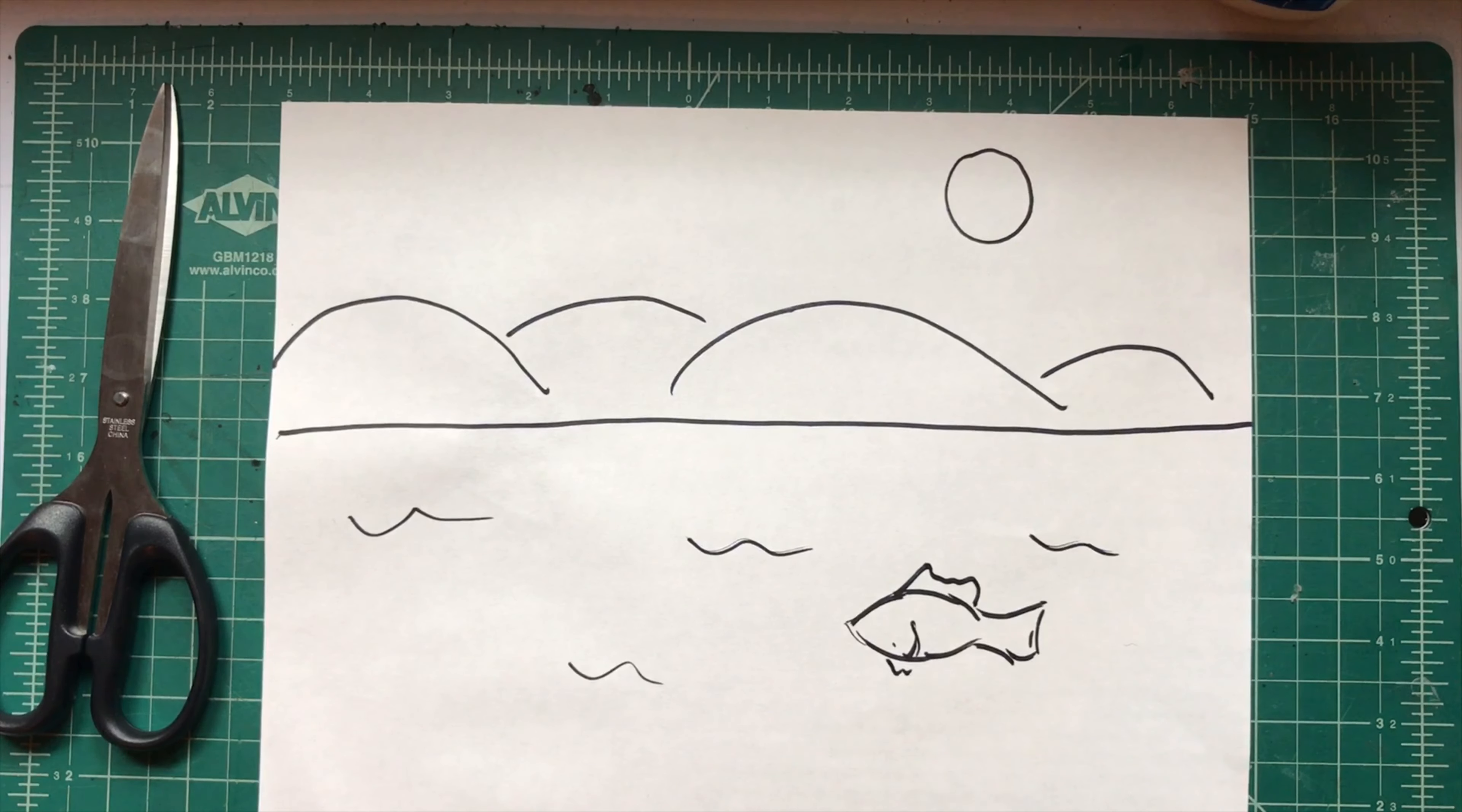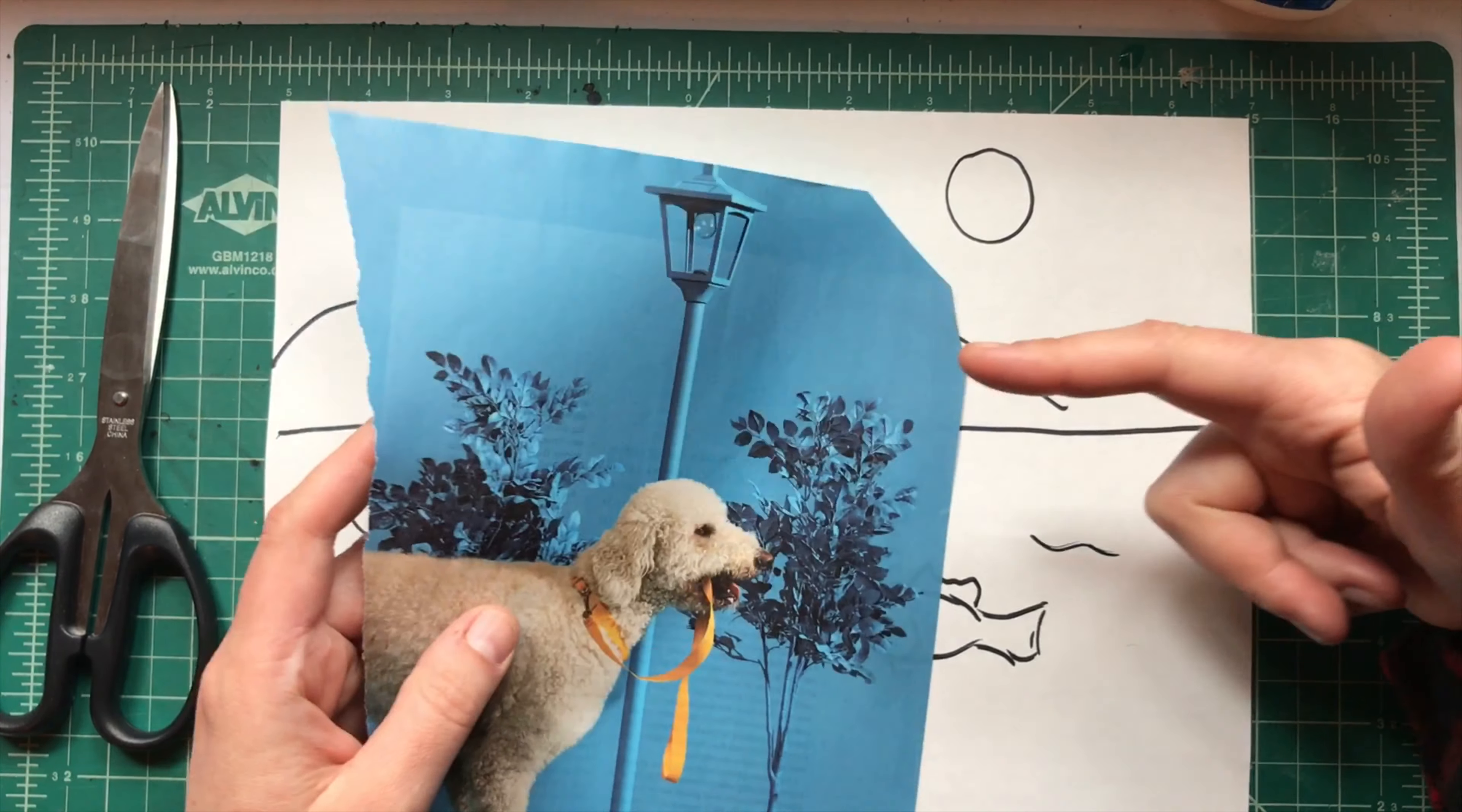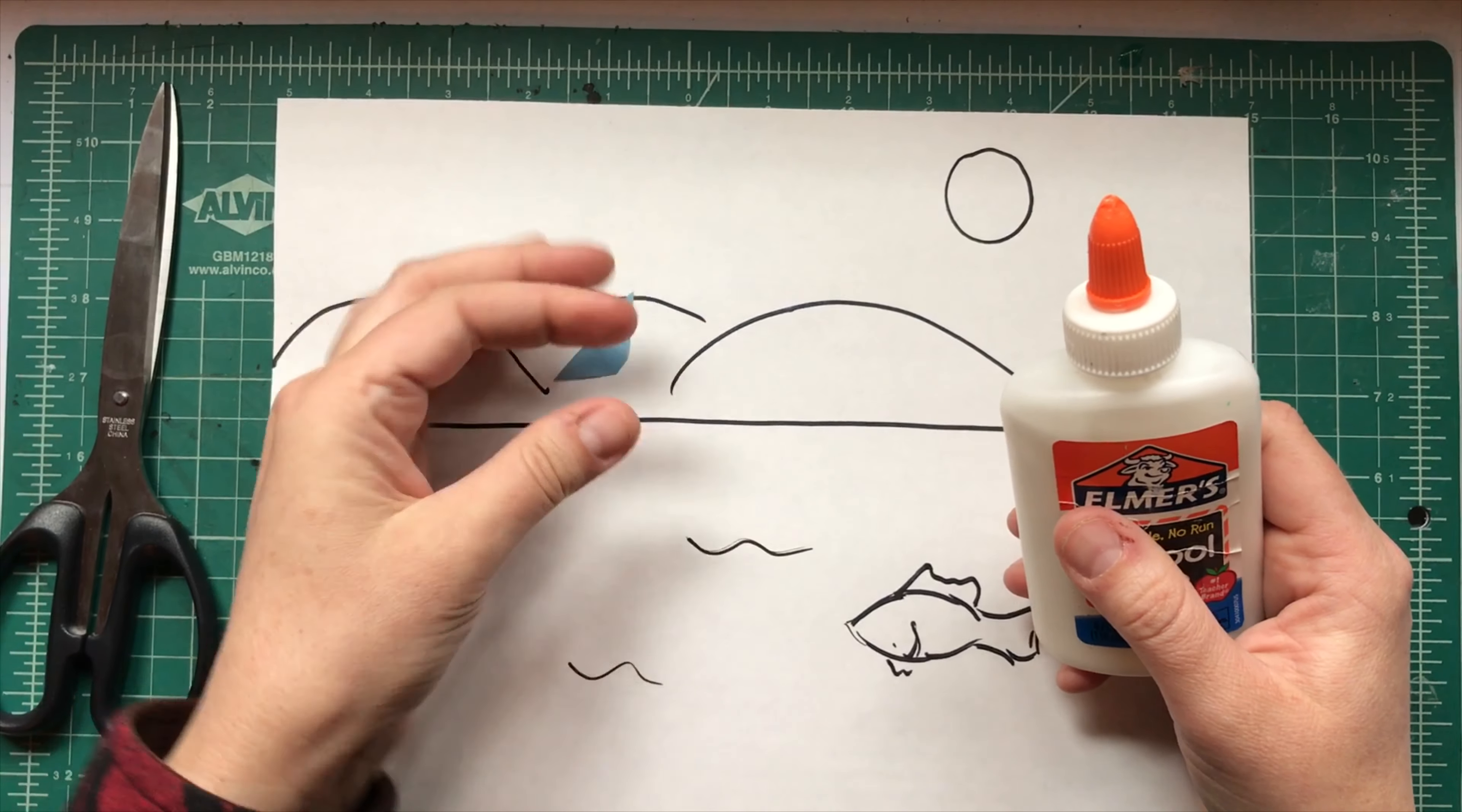But the next step is to find the colors that you need. So I flipped through magazines and found blue stuff, and I want my sky blue to be a little bit different than my water blue. But I found this blue and I started cutting it into tiny pieces. You could make yours like exact squares if you wanted. I don't. I kind of make mine a little bit more random.